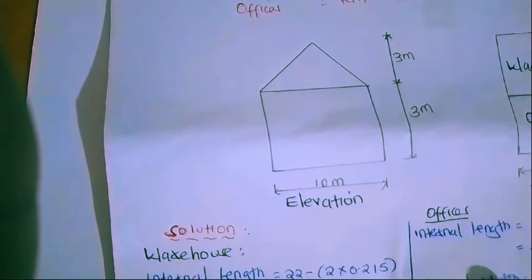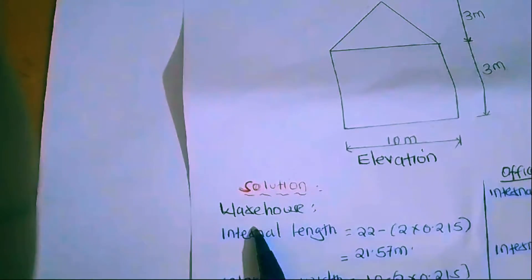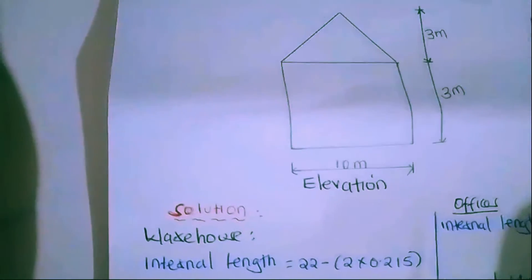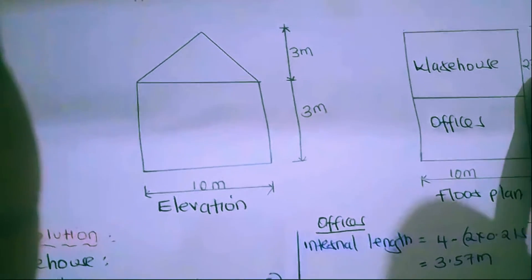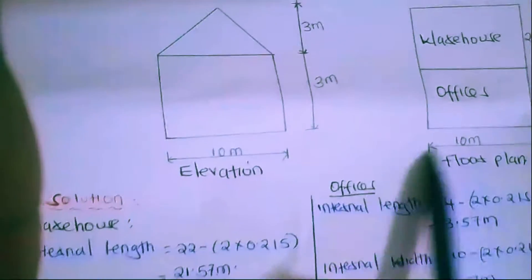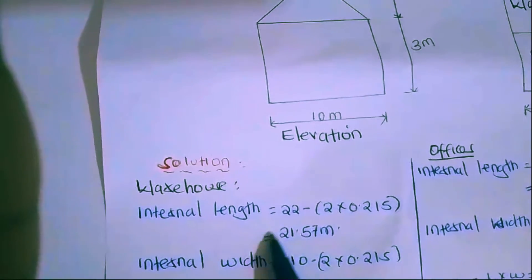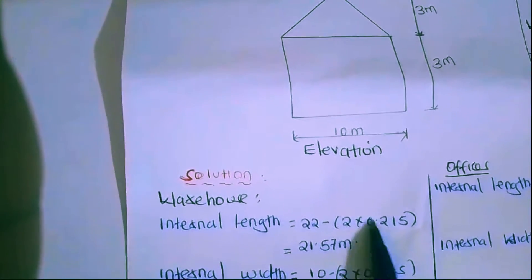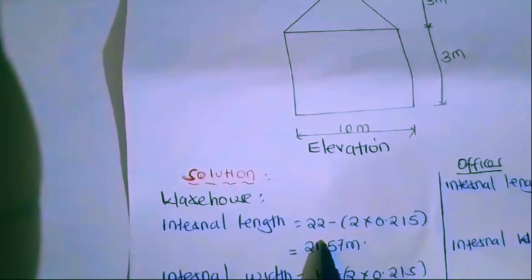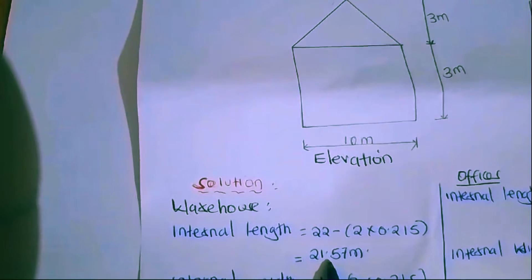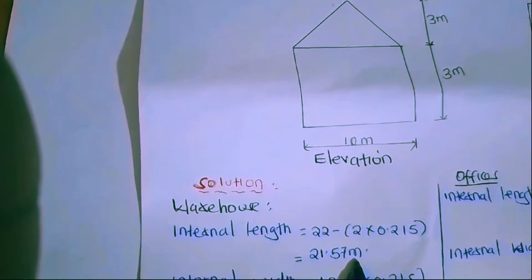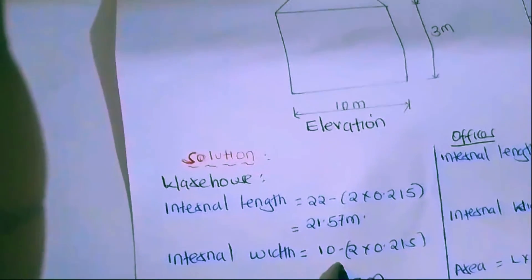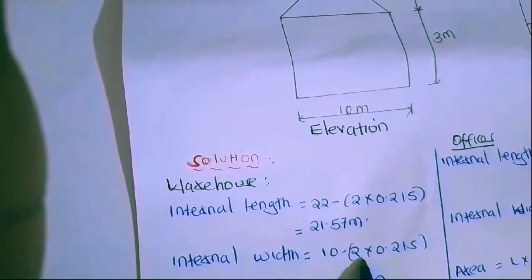We are going to use internal dimensions to get the area. Starting with the warehouse: the external length is 22 meters. We find the internal length by subtracting the wall thickness — 22 minus 2 times 0.215 — because we have two walls, one on each side. That gives us an internal length of 21.57 meters.